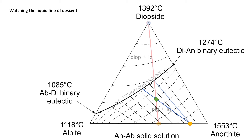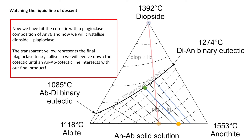If you picture a new blue line drawn at every increment, you can break this down into as many steps as you like. That line would eventually rotate to align with one of the solid black composition lines. Once we hit the cotectic line, our plagioclase has a composition of around 76% anorthite, 24% albite, and now we begin to co-crystallize diopside with our plagioclase. We already know the final plagioclase sits at around 58% anorthite, so we evolve the system along the solid black lines downward until we intersect that composition.